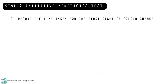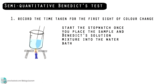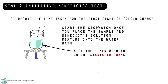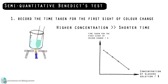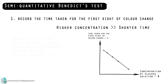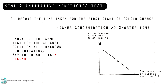If you choose the first way, start the stopwatch once you place the sample and Benedict's solution mixture into the water bath. When the solution starts to turn green, stop the timer and record the time. You will find that the higher the concentration, the shorter the time it takes for the solution to change color. Plot your results into a graph. Then carry out the same test for the glucose solution with unknown concentration, and use the interpolation method to find its concentration.